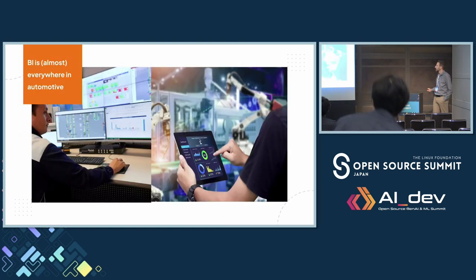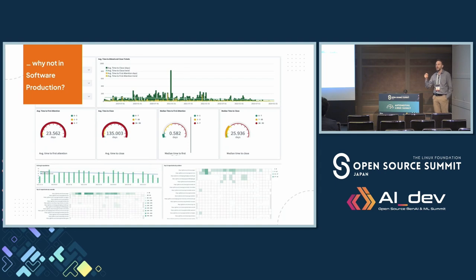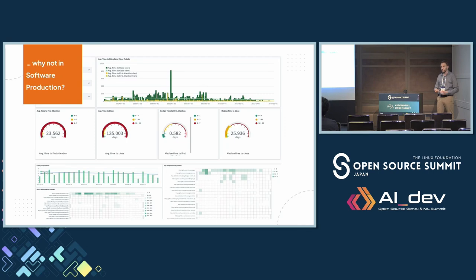We are here to discuss and open the box on the data analytics journey. If you think about the automotive industry, there is business intelligence at almost any level — manufacturing, marketing, sales, after-sales processes, all the places. But one of the key places that this is not happening, although we see it's now growing, is in the software production chain. We don't have business intelligence in how software is produced in automotive industry. This is why we are here.